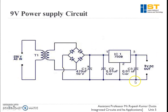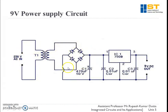This is a standard 9V power supply circuit in which a transformer steps down the AC voltage from 230V to a bridge rectifier circuit, and from there the output is given to a regulator IC — the 7809. Here '09' indicates that we will get a 9V output from this regulator.